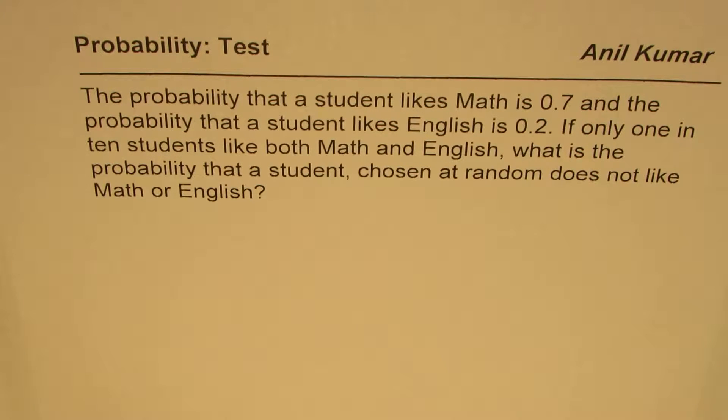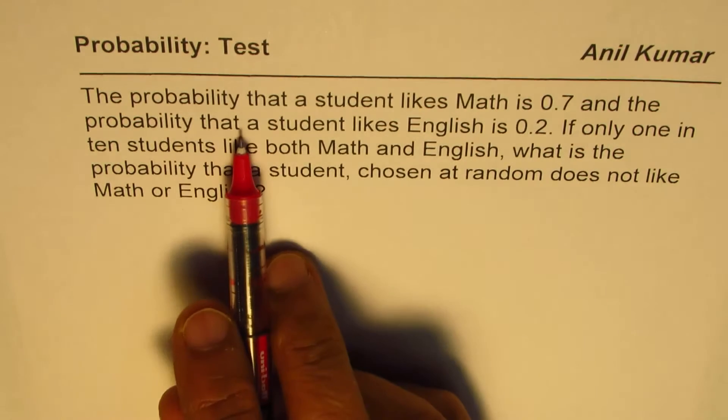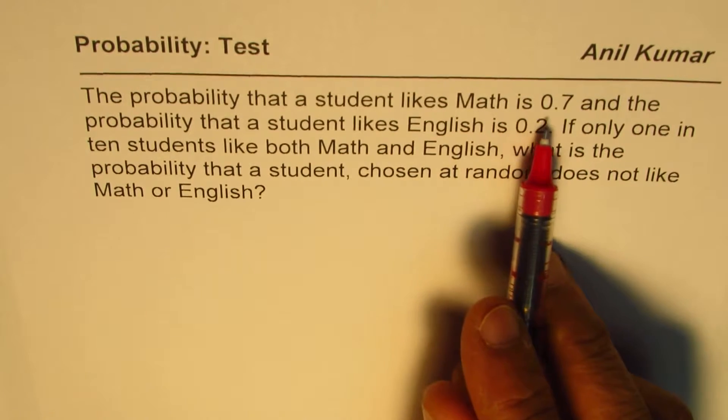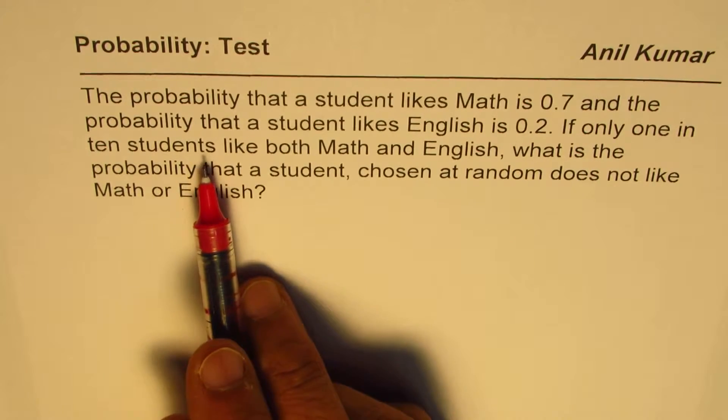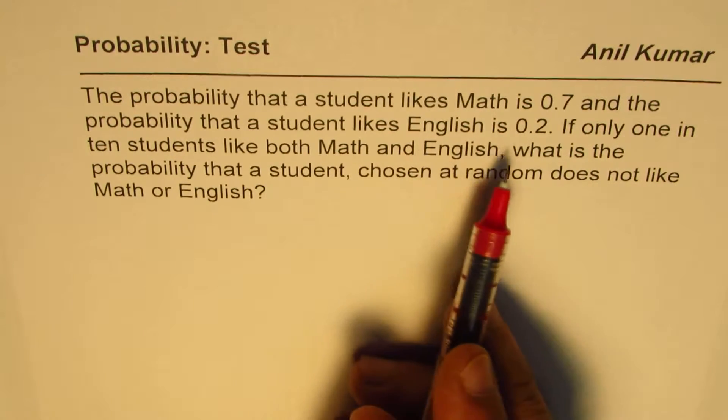I'm Anil Kumar sharing with you questions to practice for probability test. The question here is, the probability that a student likes math is 0.7 and the probability that a student likes English is 0.2.